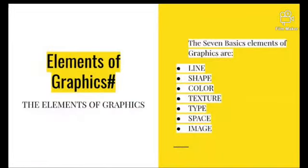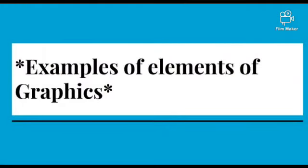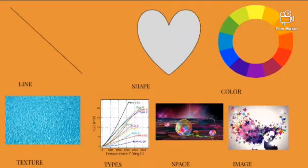Elements of graphics. The seven basic elements of graphics are line, shape, color, texture, type, space, and image. These are some examples of elements of graphics, as well as images of what they look like. We have the line, the shape, the color, the texture, the types, the space, and the image.